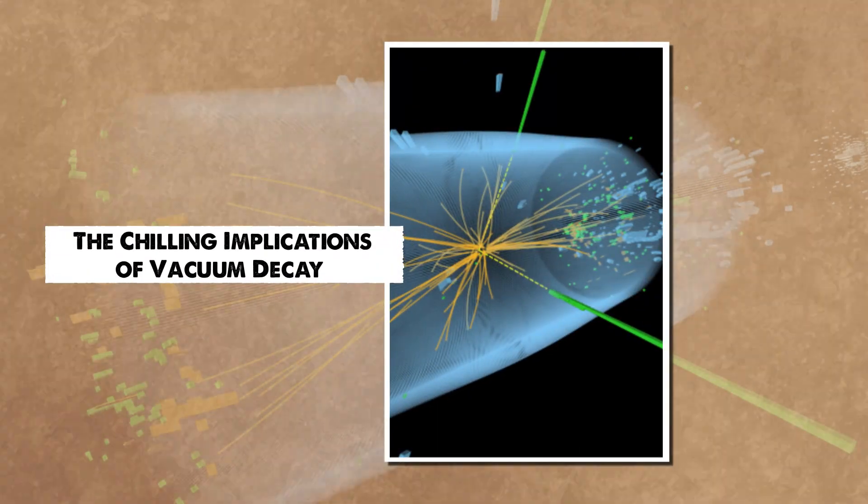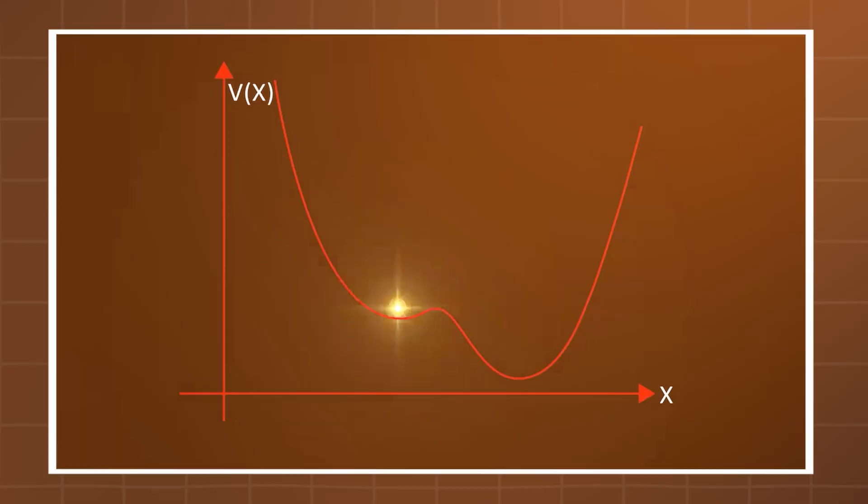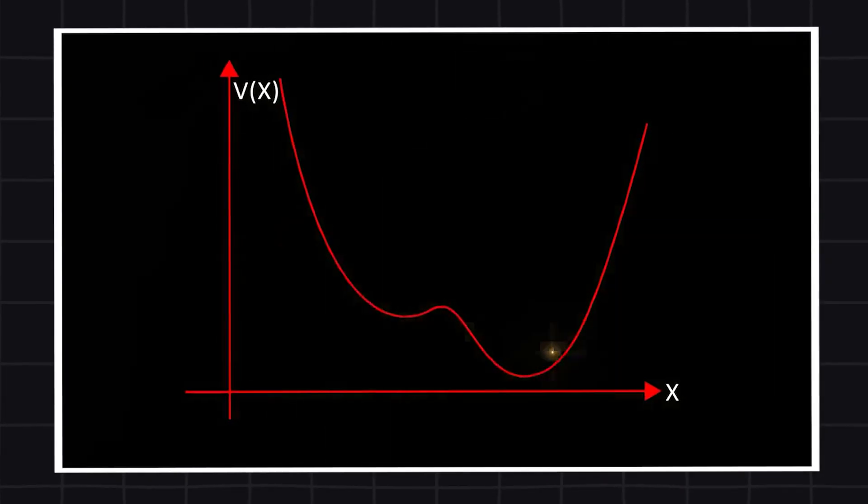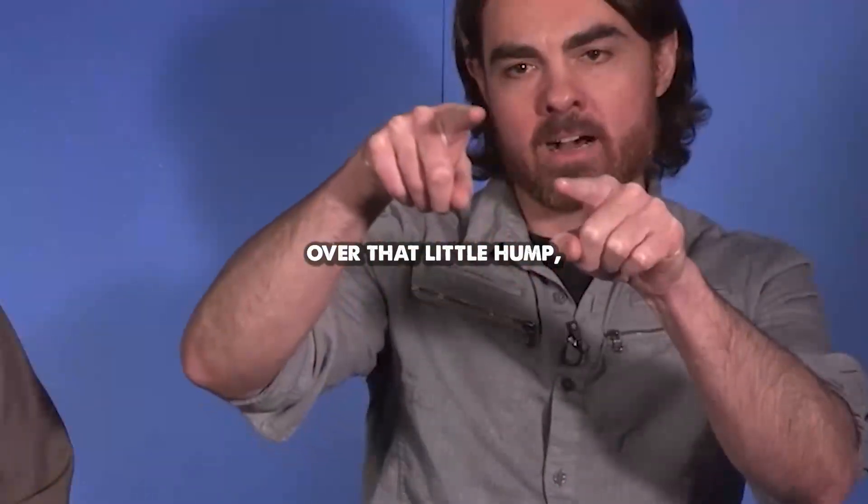The discovery of the Higgs boson in 2012 did more than confirm a long-theorized particle. It introduced the chilling possibility of vacuum decay. This theory suggests that the Higgs field, responsible for giving particles their mass, might not be in its most stable state. Over that little hump, there may be a deeper drop and a much more preferential, comfortable, lower energy for the Higgs field.